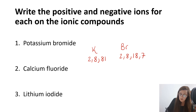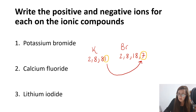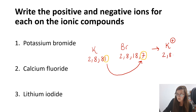Again, we're only concerned with the outer electrons of both of these atoms. Potassium will give its outer electron up to bromine, and that will produce two ions — the potassium plus ion with an electron configuration of 2, 8, 8, and the bromide negative ion with an electron configuration of 2, 8, 18, 8.